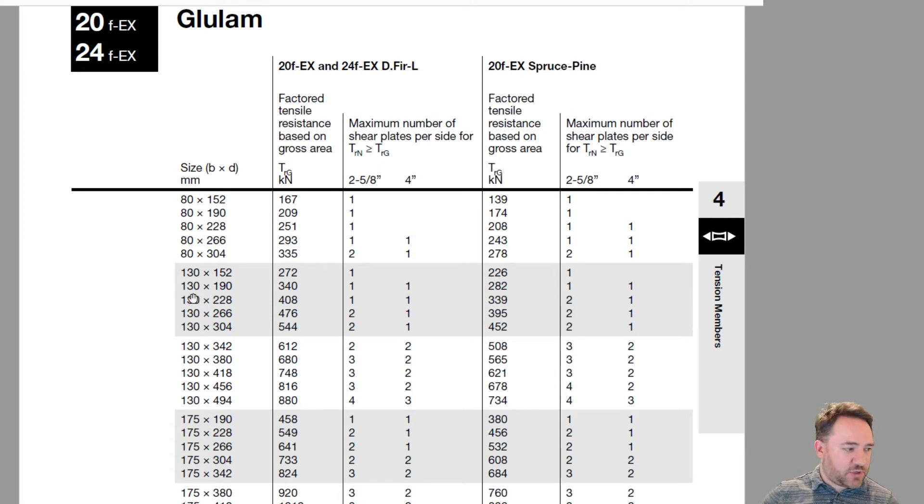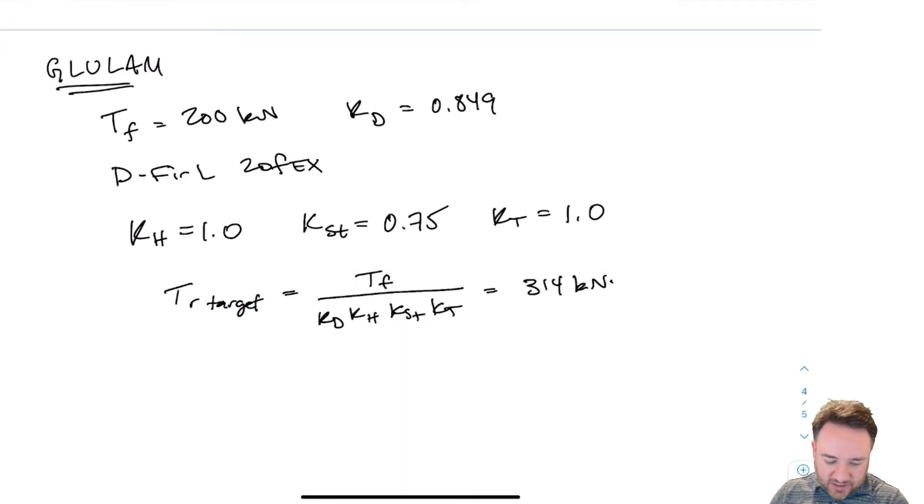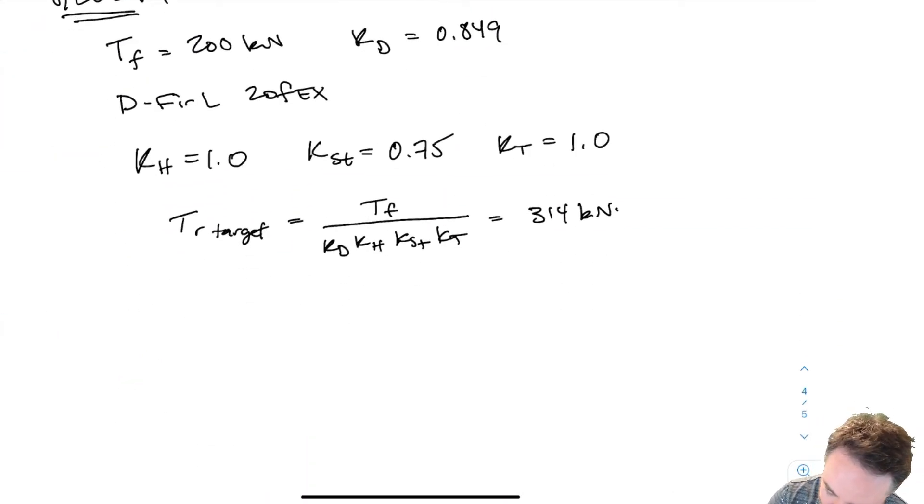This is really a design decision which one of these I would like to go with, one that's more rectangular or one that's more square. Since it's a tension member, maybe it makes more sense to take the squarish one because it's going to look more compact and I don't need the extra depth for bending. If I had a big connection that I need to design for this, maybe it would be a good idea to go with the deeper one. Let's go with this one for now, 130 by 190. We are going to select Douglas Fir Larch 20F EX 130 by 190.